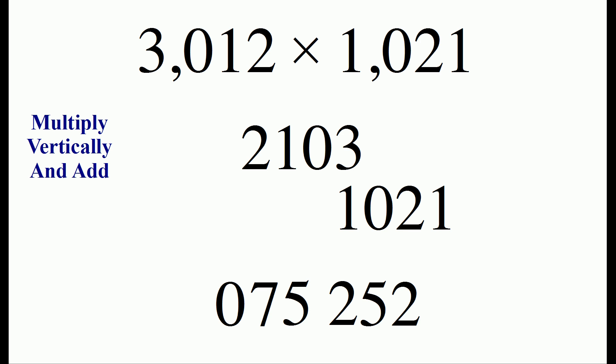And now finally we have 3 times 1 is 3. We put in some commas and that's our answer. 3,012 times 1,021 is 3,075,252.